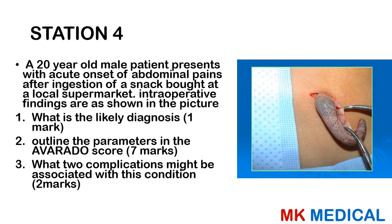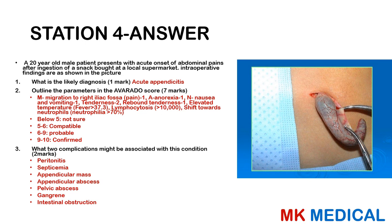Station 5: A 20-year-old male patient presents with acute onset of abdominal pain after ingestion of a snack at a local supermarket. Intraoperative findings are shown in the picture. What is the likely diagnosis? Outline the parameters in the Alvarado score. What two complications might be associated with this condition?